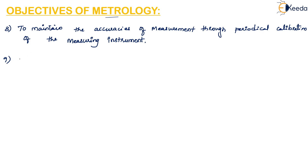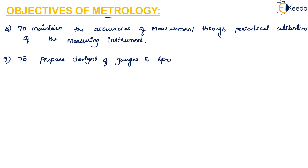The final objective is to prepare designs for gauges and special inspection fixtures. Metrology deals with designing new gauges and special measuring fixtures. These are the main objectives of metrology. I hope you have understood the topic. Thank you.